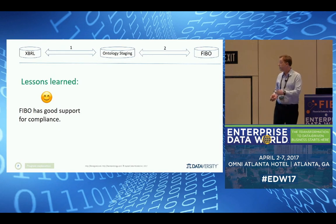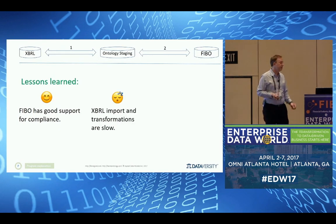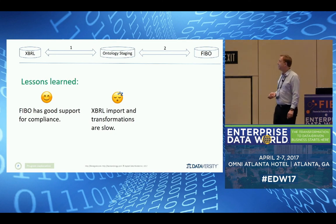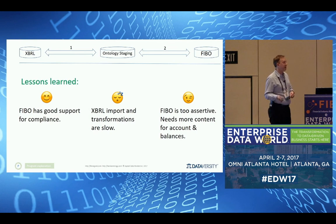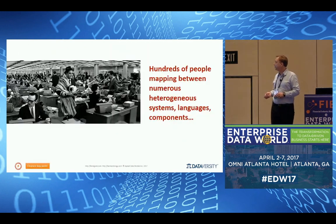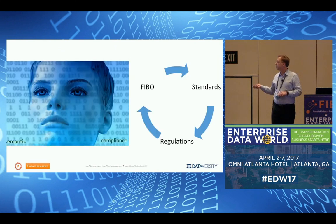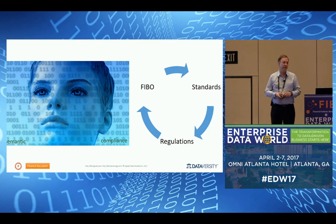Lessons learned: FIBO has good support for compliance, in particular the entity schedule from the XBRL report. The imports and transformations are kind of slow in TopRate. And FIBO should have more content for accounts and balances — there's really not enough. To recap: we want to get from the 1960s to the 21st century, and we can do that with semantic compliance through this virtuous circle of FIBO, standards, and regulations. Thank you.